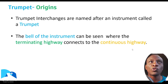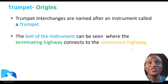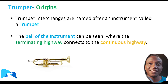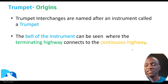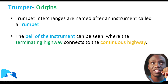So why did the trumpet interchange originate? The origins are quite obvious. The trumpet interchange was named after the trumpet instrument, and the bell of the instrument can be seen on a trumpet interchange — it's the semi-directional loop that terminates into the continuous highway. This is where the origins came from.